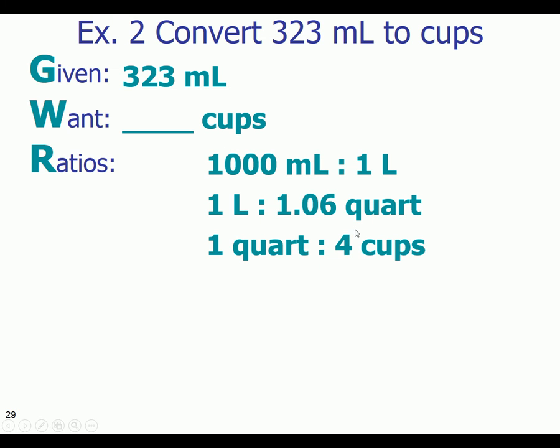Here are those three conversions. Now, I may have them flip-flopped. I may have them in a different order. It doesn't matter. We're just listing down the ratios we see on the paper to help us get from 323 milliliters to cups.